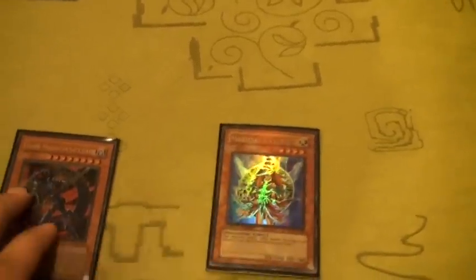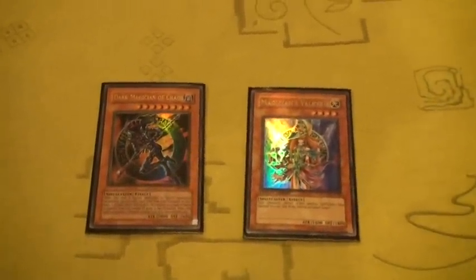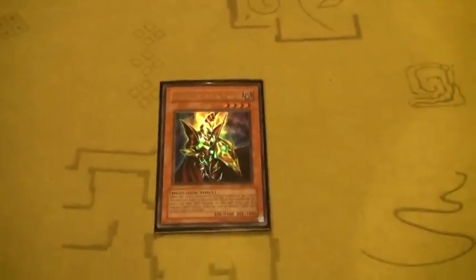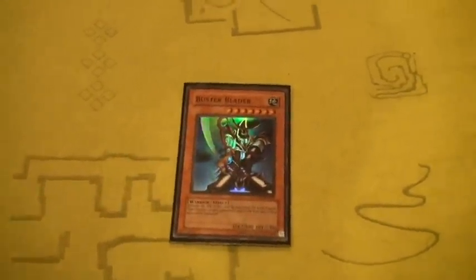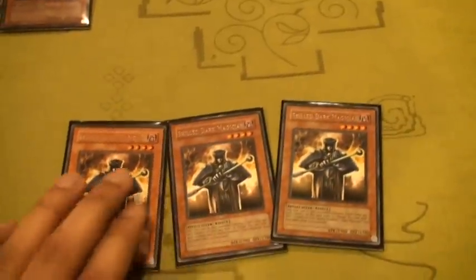I got Magician's Valkyria, and Dark Magician of Chaos. I have Breaker the Magical Warrior, I have a Buster Blader, obviously for Fusion, Dark Magician. Then I have one, two, three Skilled Dark Magicians.